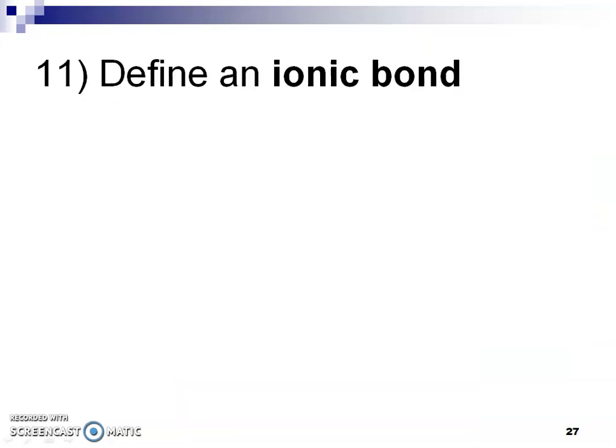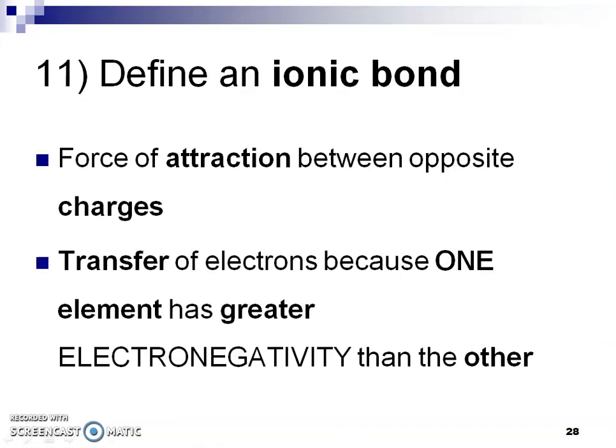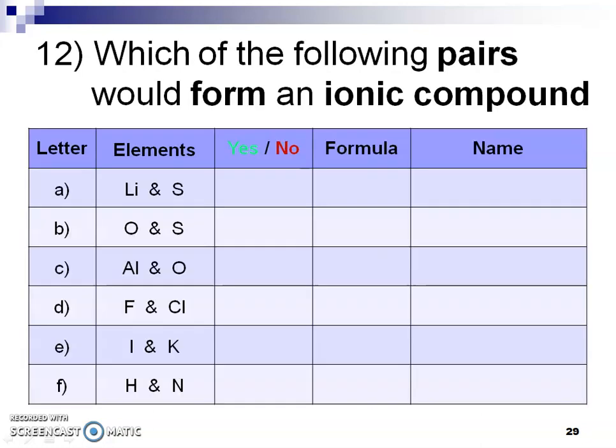Number eleven, answer. Hopefully that makes sense, and you paused and read that over. Twelve, again, pause, and you might want to write these out to get a better understanding now. I did have here yes or no, and so if you want to continue with the yes, coming up with the formula name, that's a great idea. However, for the no's, can you come up for a reason why? Why does that pair of elements not make an ionic compound? What's so special about them?